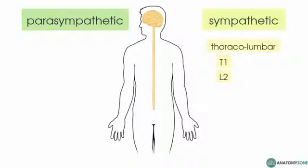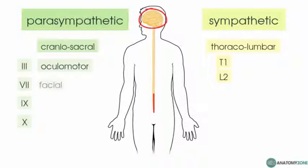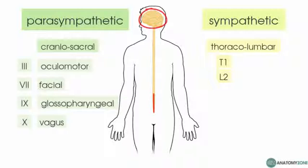The parasympathetic nervous system on the other hand is referred to as craniosacral, so it has cranial nerve components and sacral components. The cranial nerves which are involved are cranial nerves 3, 7, 9 and 10, which is the oculomotor, facial, glossopharyngeal and vagus nerve, and the sacral components are sacral regions S2 to S4.